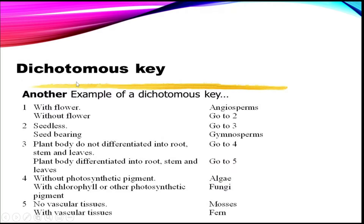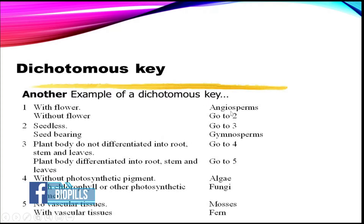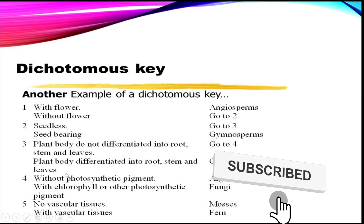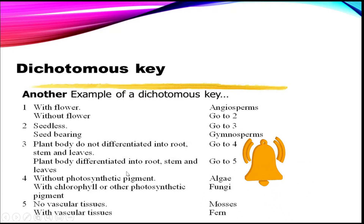Here is another example of the dichotomous key. Question 1: with flower? If yes, it is an angiosperm. Without flower? Go to 2. Question 2: seedless or seed-bearing? If seedless, go to 3. If seed-bearing, it is a gymnosperm. And so on — we continue going down, finding the features of the organisms.